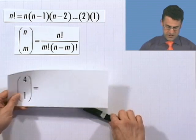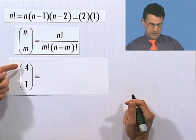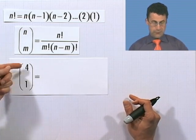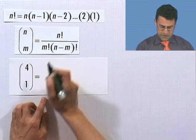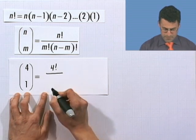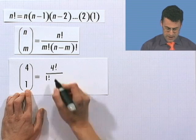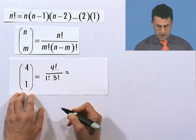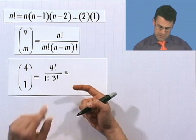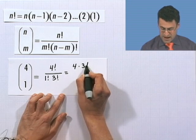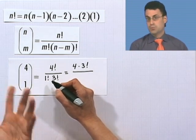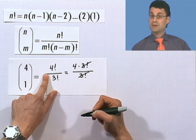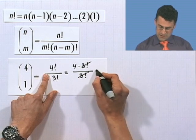Let's look at 4 choose 1. You would read this as '4 choose 1,' not '4 over 1.' By the definition, we take 4 factorial divided by 1 factorial times (4 minus 1) factorial, which is 3 factorial. So this equals 4 factorial over 3 factorial. I write 4 factorial as 4 times 3 factorial, and 1 factorial is just 1. The 3 factorials cancel — 3 factorial is 6, so 6 divided by 6 — and I get the answer of 4.